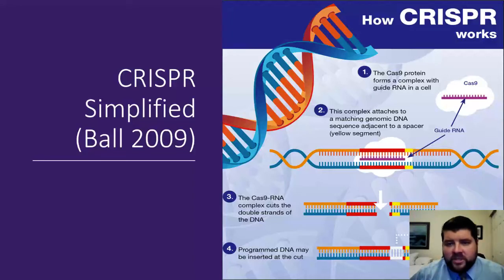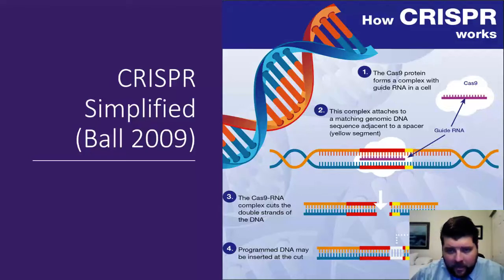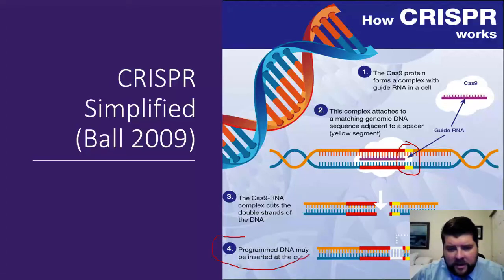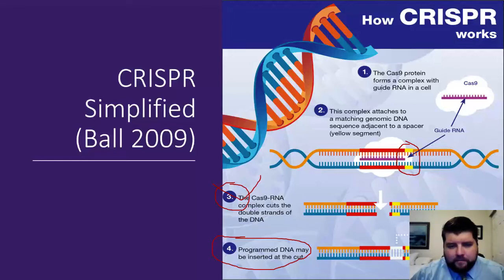Here's CRISPR in a more simplified version — the easiest graphic for showing exactly how it works. It starts with the Cas9 protein forming with the guide RNA, and you can see the PAM site, which stops it. The Cas9-RNA complex cuts the double strand of DNA, allowing for any programmed DNA to be inserted. Normally, the process stops at step three — that's the natural mechanism. Adding step four with the programmed DNA is the synthetic biology; that's where we get the genetic engineering aspect.